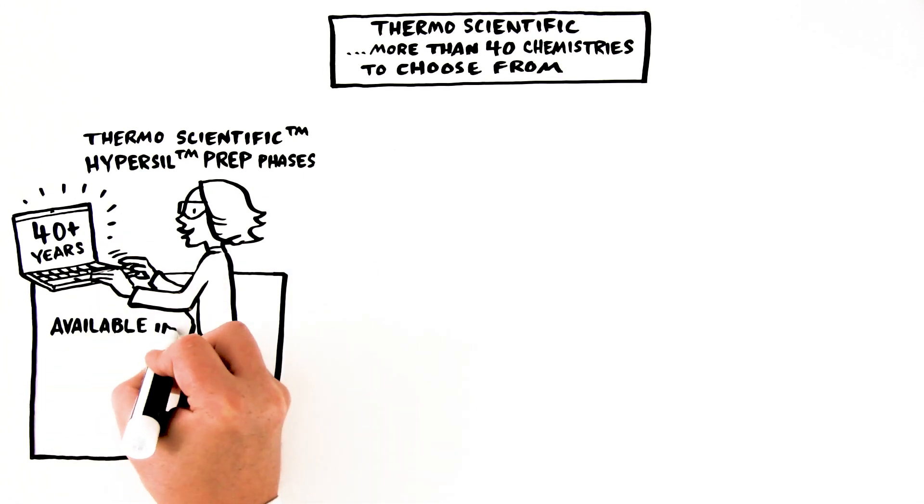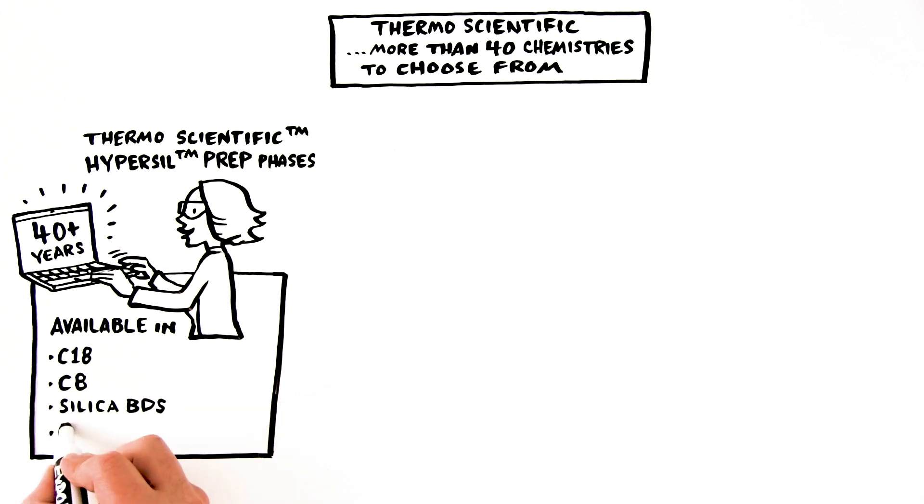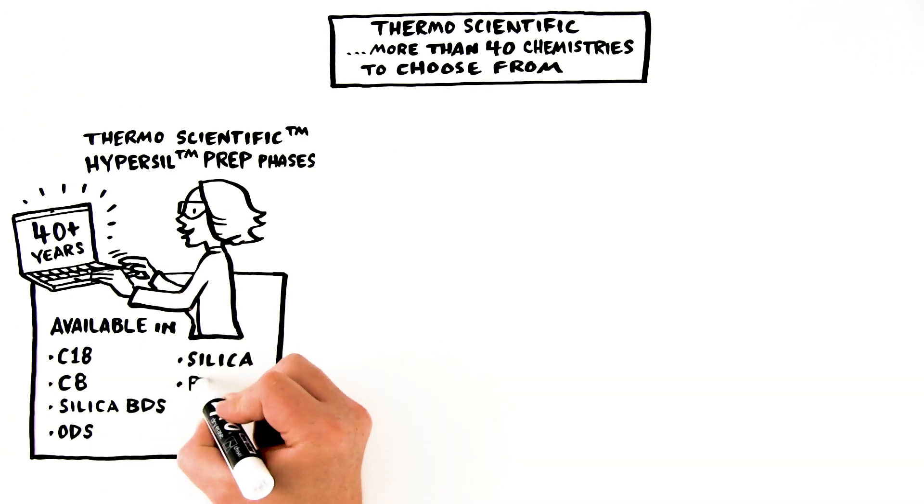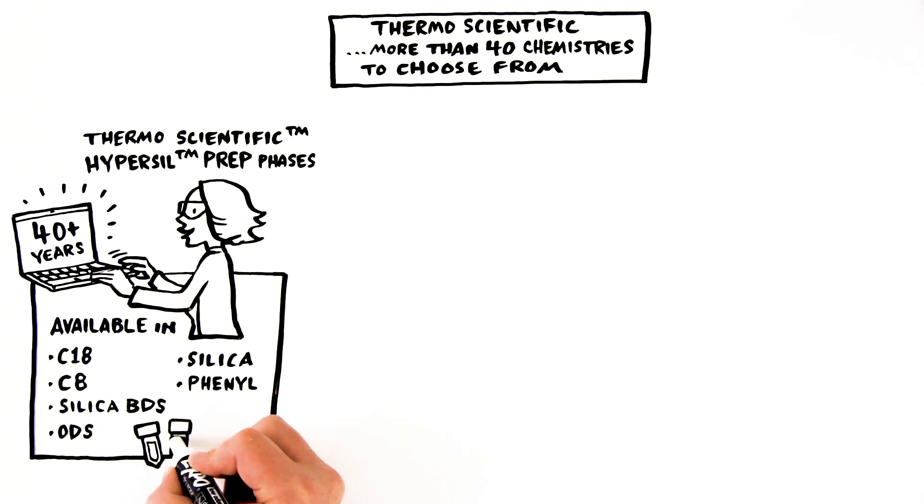HyperSyl Prep stationary phases are excellent choices for routine applications which require development from analytical to Preparative LC scale. Available in C18, C8, Silica BDS, as well as ODS, Silica, and Phenyl phases, the HyperSyl Prep range has been designed to provide good selectivity for a wide number of applications.